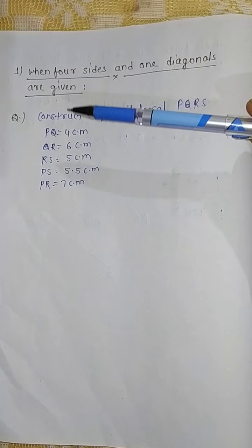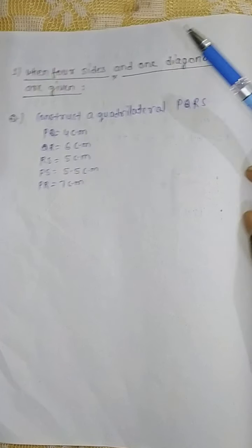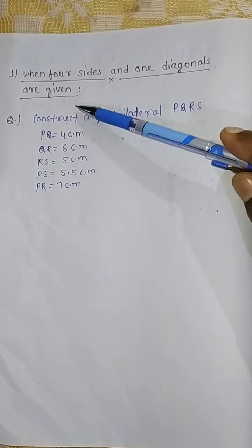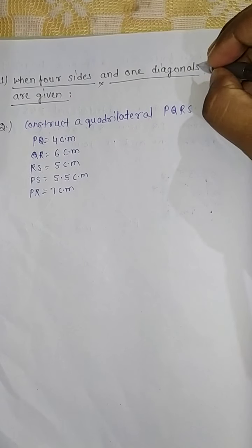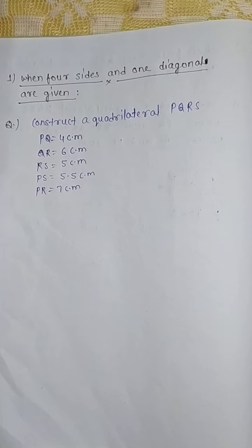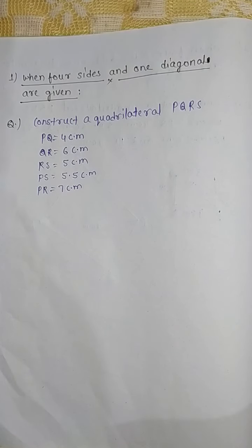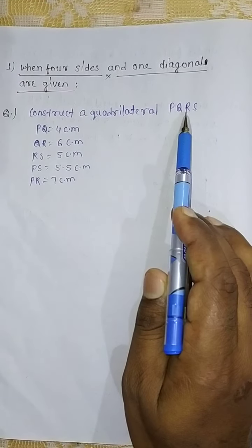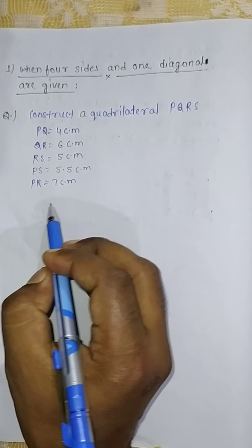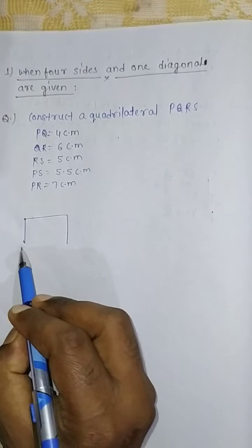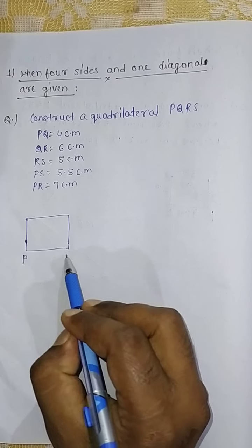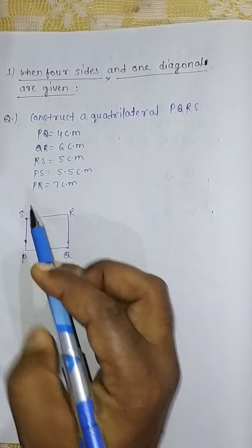From this question, we will understand how to draw a quadrilateral where four sides and one diagonal are given, by using a compass. First of all, draw a rough sketch of quadrilateral PQRS. This is the quadrilateral with vertices P, Q, R, and S.